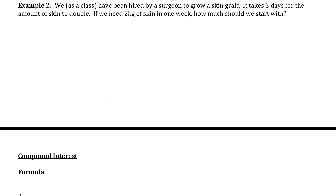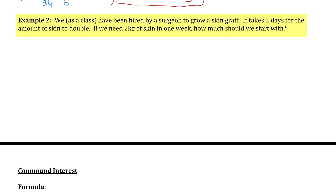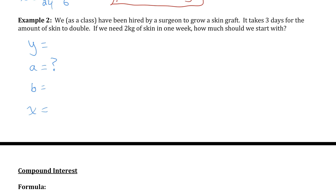Let's try example two. We've been hired by a surgeon to grow a skin graft. It takes three days for the amount of skin to double. If we need two kilograms of skin in one week, how much should we start with? Once again, we're trying to solve for the initial amount. Let me jot down the four parameters: y, a, b, and x. 'a' is what we don't know. We know the future amount — we want it to be two kilograms. The skin doubles, so the base of the power is going to be two.